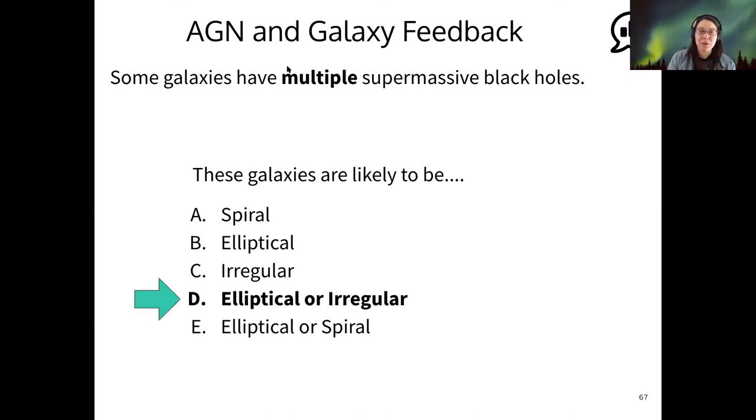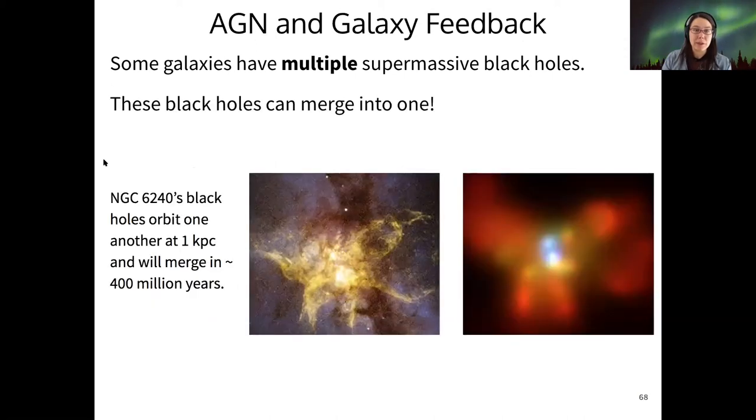It could be elliptical or irregular galaxies. We could expect multiple supermassive black holes within ellipticals where they haven't quite joined each other yet. But irregular galaxies are probably currently undergoing collision. And so we could find multiple supermassive black holes in irregulars, and they haven't yet had time to settle into ellipticals. And we actually do see this.